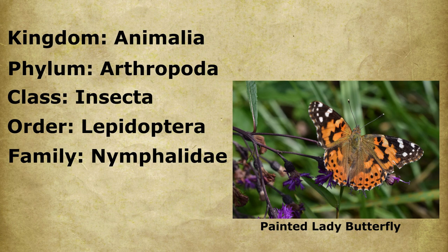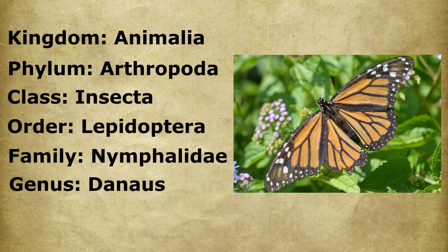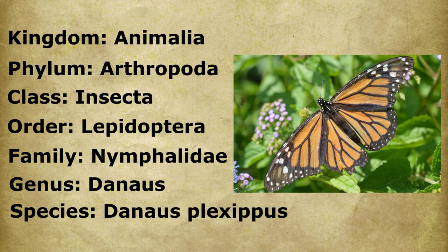So Family is where we start to get a little more specific. Their genus is Danaus, and their species is Plexippus. There are multiple different species of butterfly within the genus Danaus, but there's only one monarch butterfly, and there's only one Danaus plexippus.